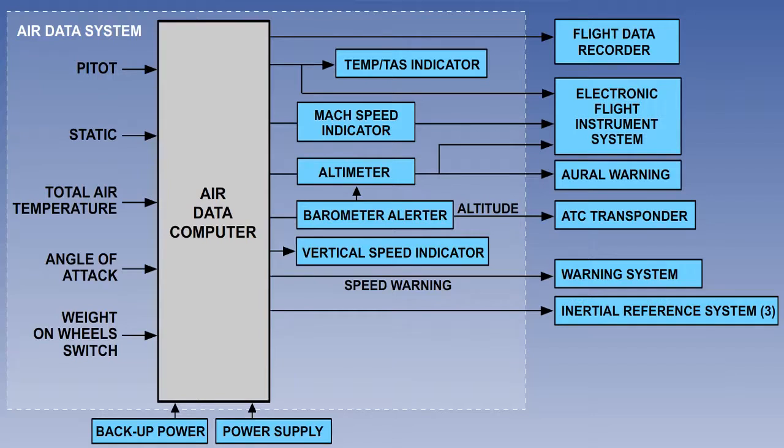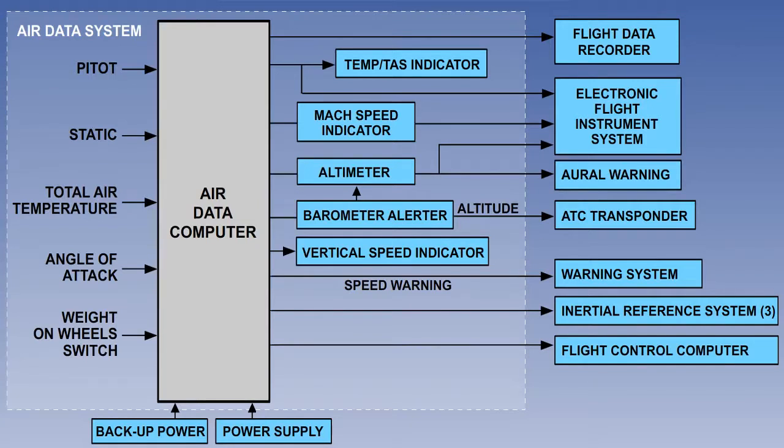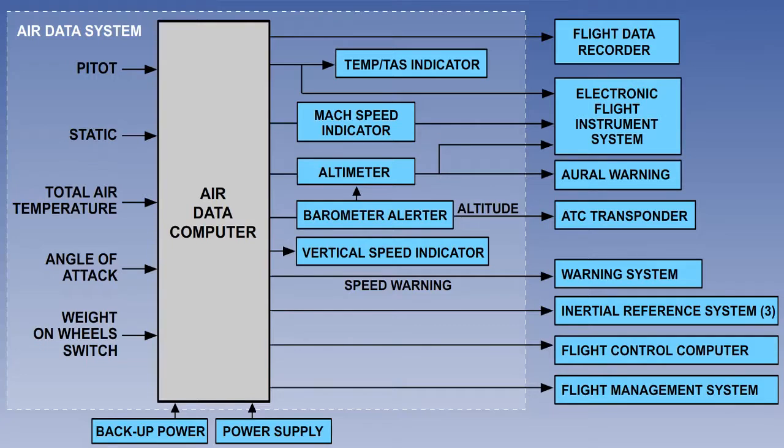Altitude information is also passed to the height encoding transponder for air traffic control purposes. There is an output to the direct reading VSI, and the same information is also fed to the EFIS. There will also be both an overspeed and an underspeed aural warning system. The stall warning system is decoupled when the aircraft is on the ground, which explains the need for the weight on wheels switch. Outputs are also fed to the three inertial reference systems, the flight control computer, and the flight management system or FMS. So you can see that the air data computer is a central source of information for many other user systems, passing the information using digital electronics, not pitot and static pipes.